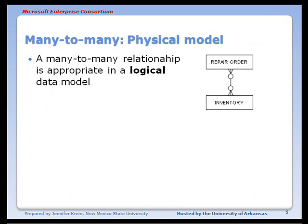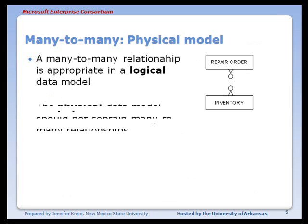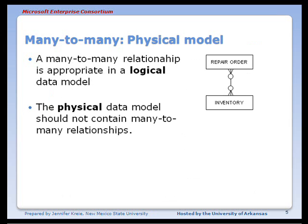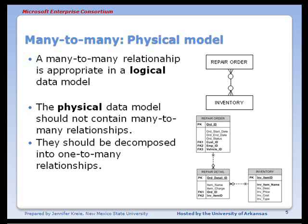So a many-to-many relationship is appropriate in a logical data model. In a physical data model that serves as the blueprint for the construction of a database, all many-to-many relationships should be decomposed into their one-to-many relationships.